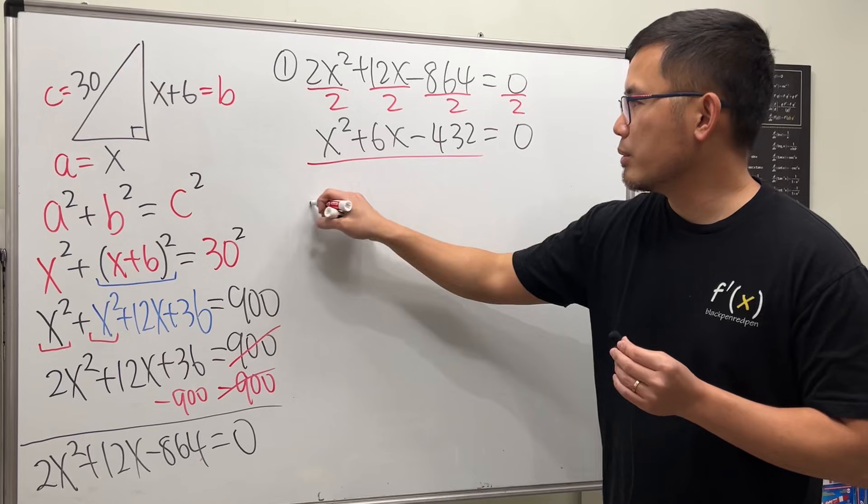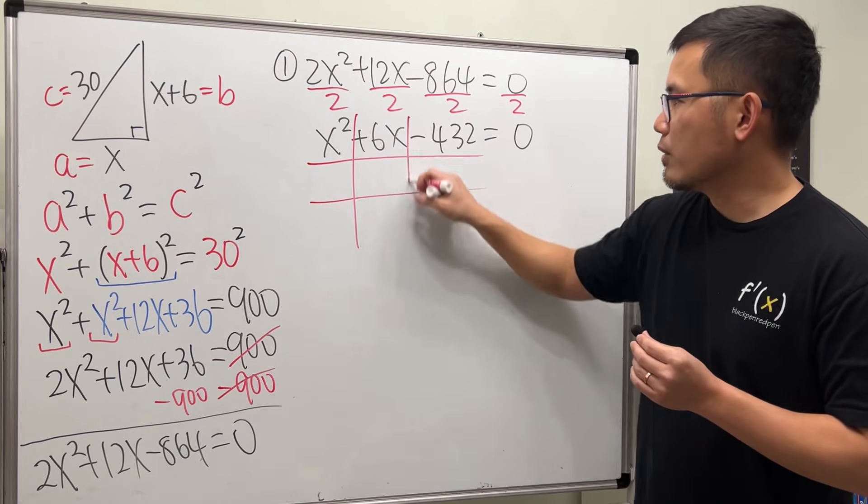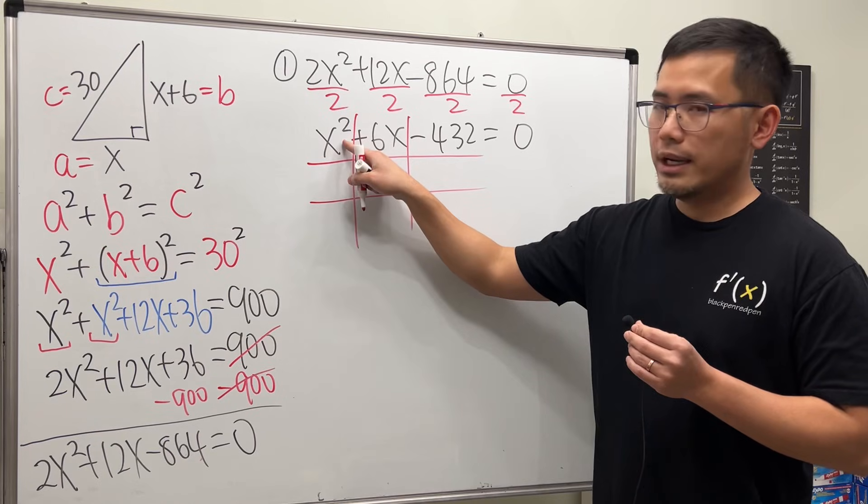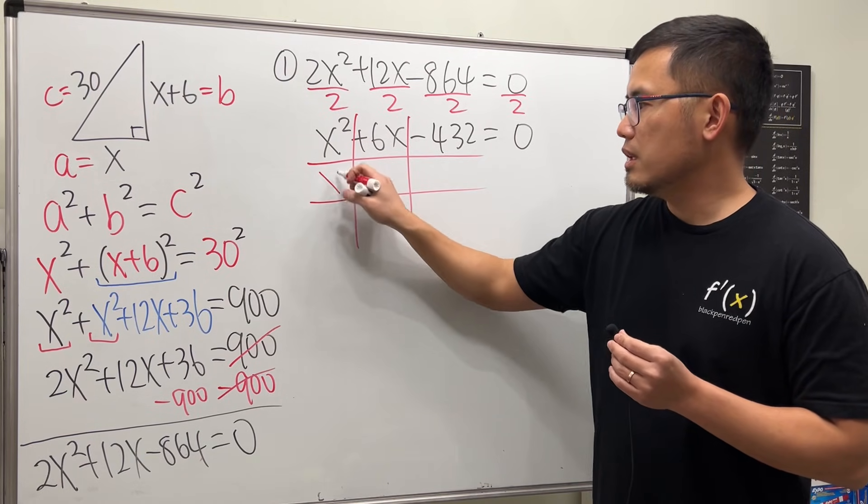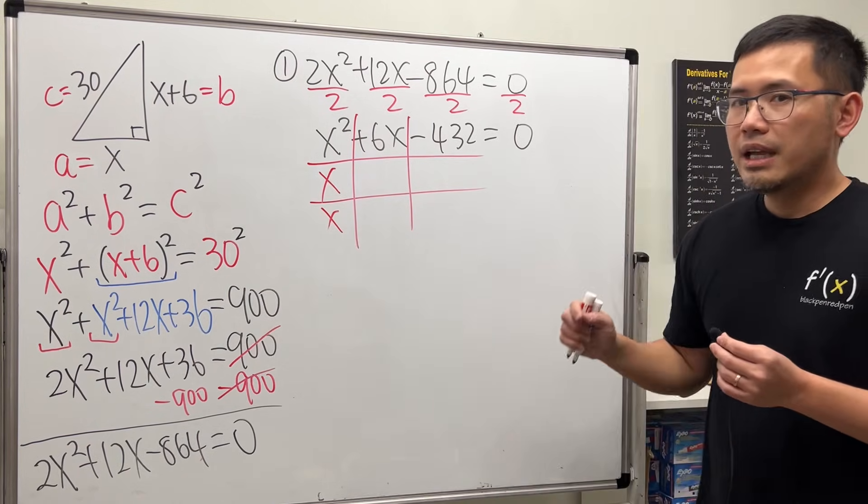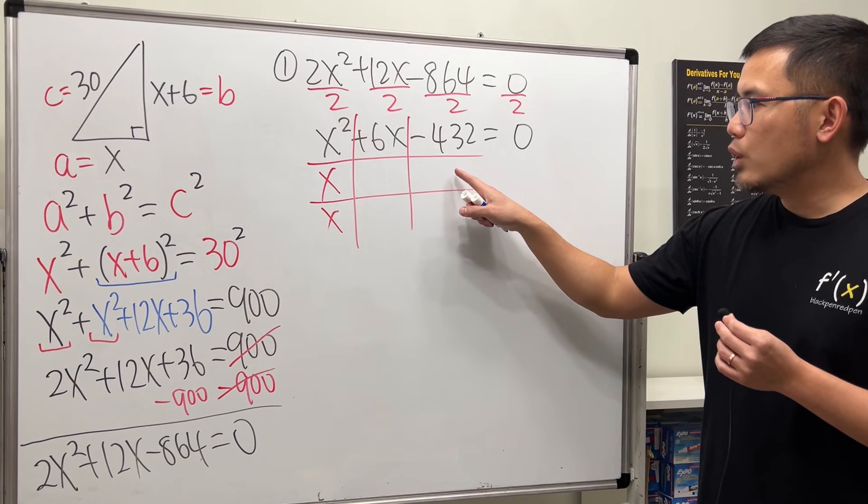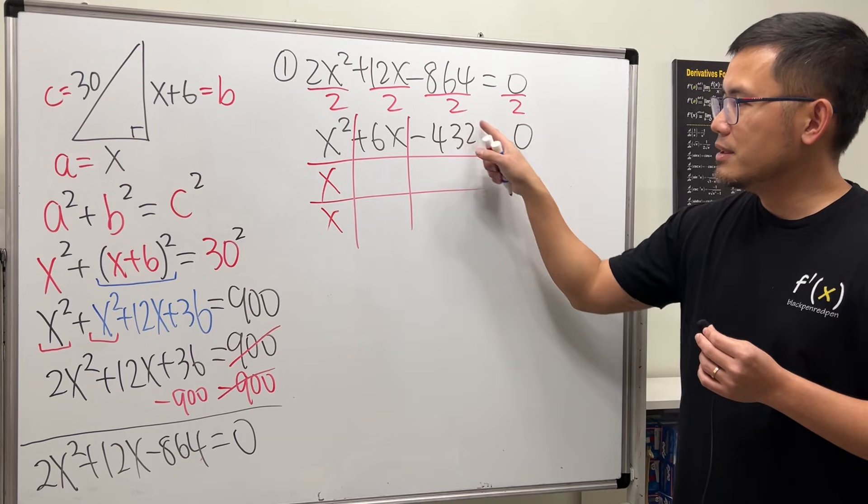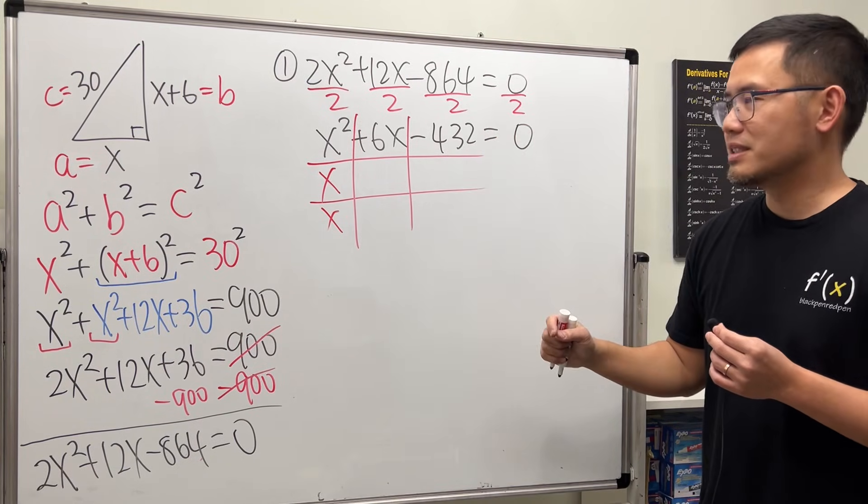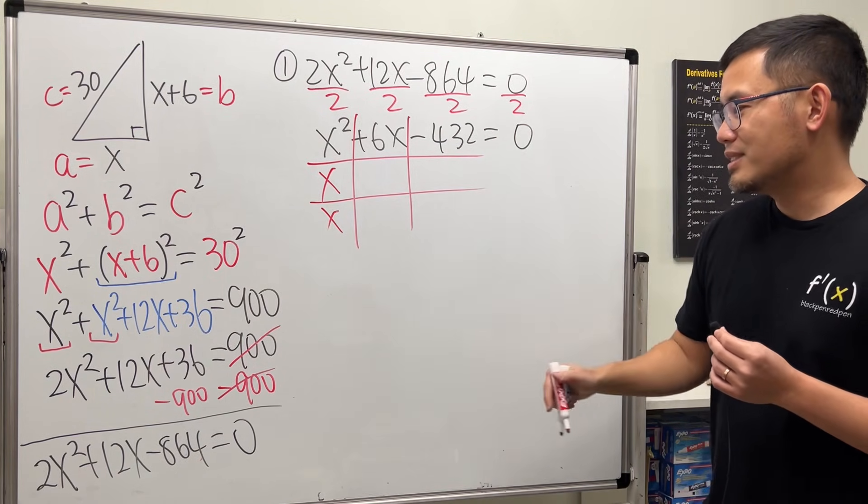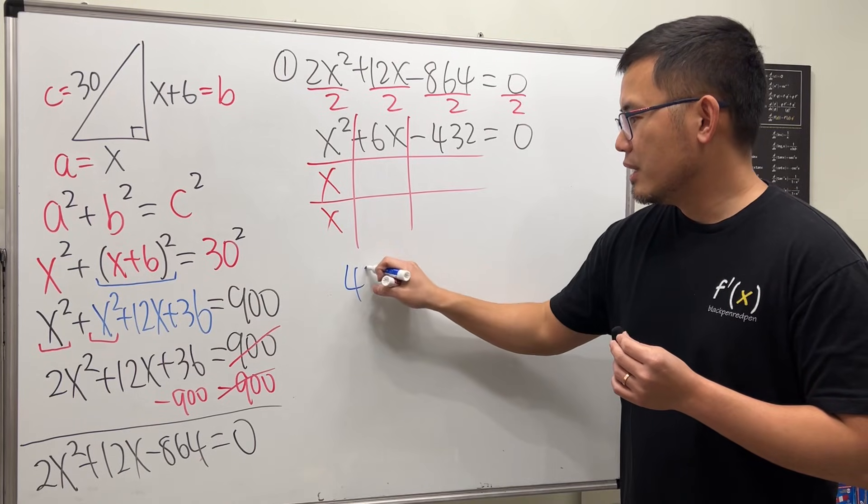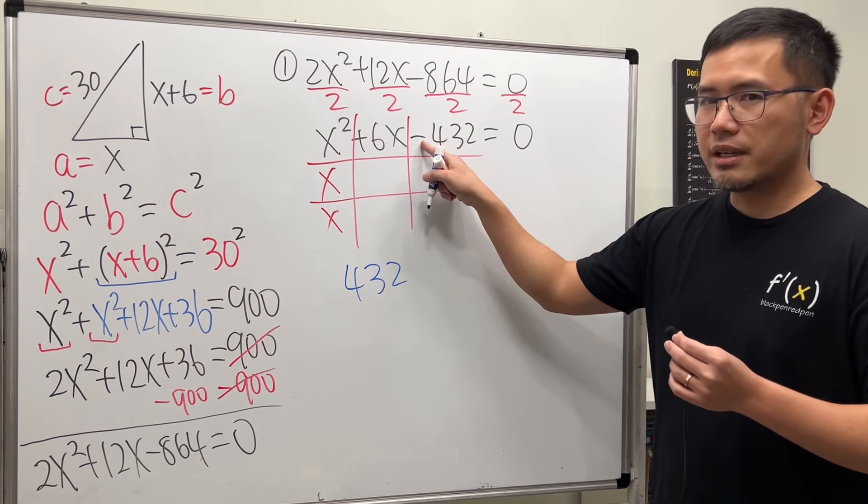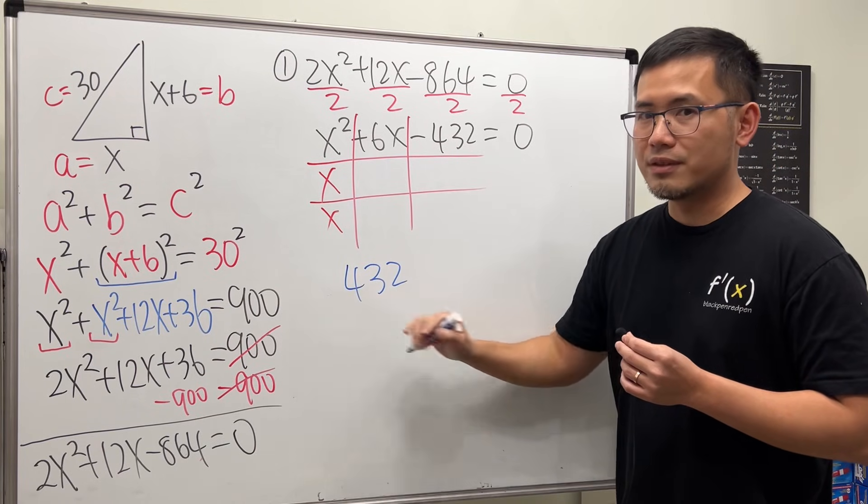First, we have to ask, what times what will give you x²? And the answer is x times x. Good. And now, we have to ask ourselves, what times what will give us -432? And I agree this is a big number to work with. So, let's write down the possibilities. 432. Let's just look at this. I know it's negative, but let's just break this number down first.